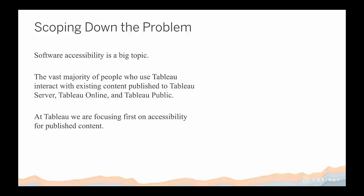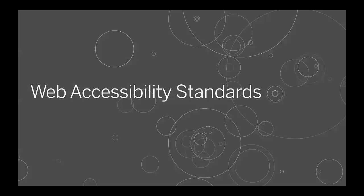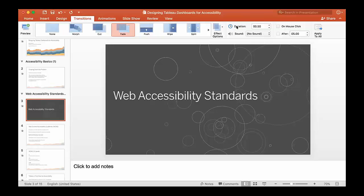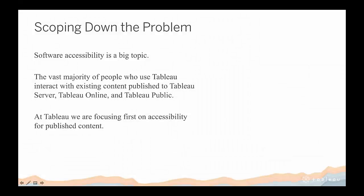I'm going to talk about what we are doing at Tableau in terms of enabling you to create accessible content with our products. Software accessibility is a big topic, so we needed to narrow it down into something tractable that adds real value. We looked at how to get impact to the greatest number of users: the vast majority of Tableau users interact with and view existing content published to Tableau Server, Online, or Public, with a relatively small number actually creating content.